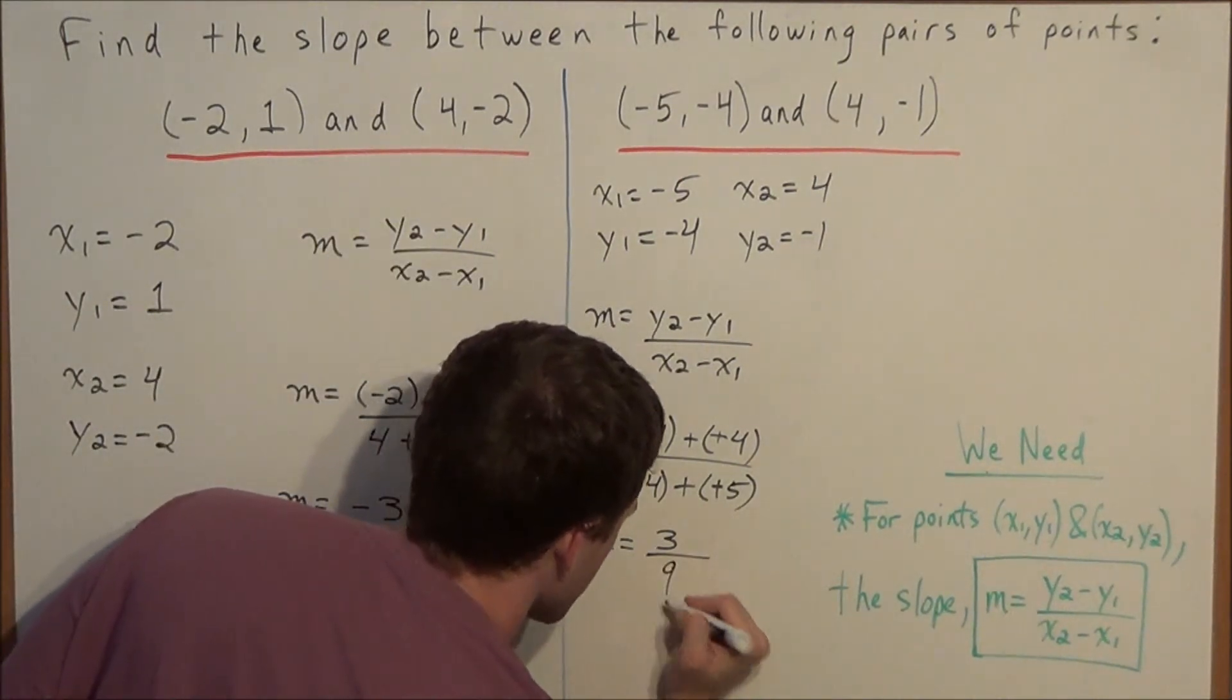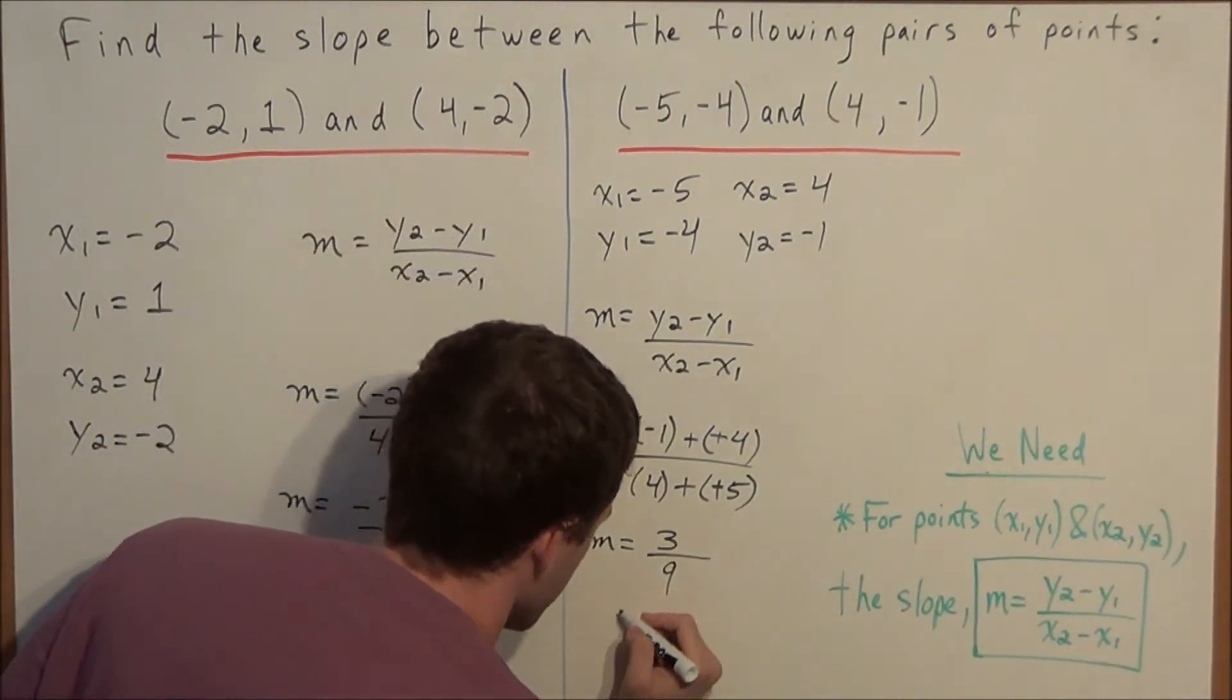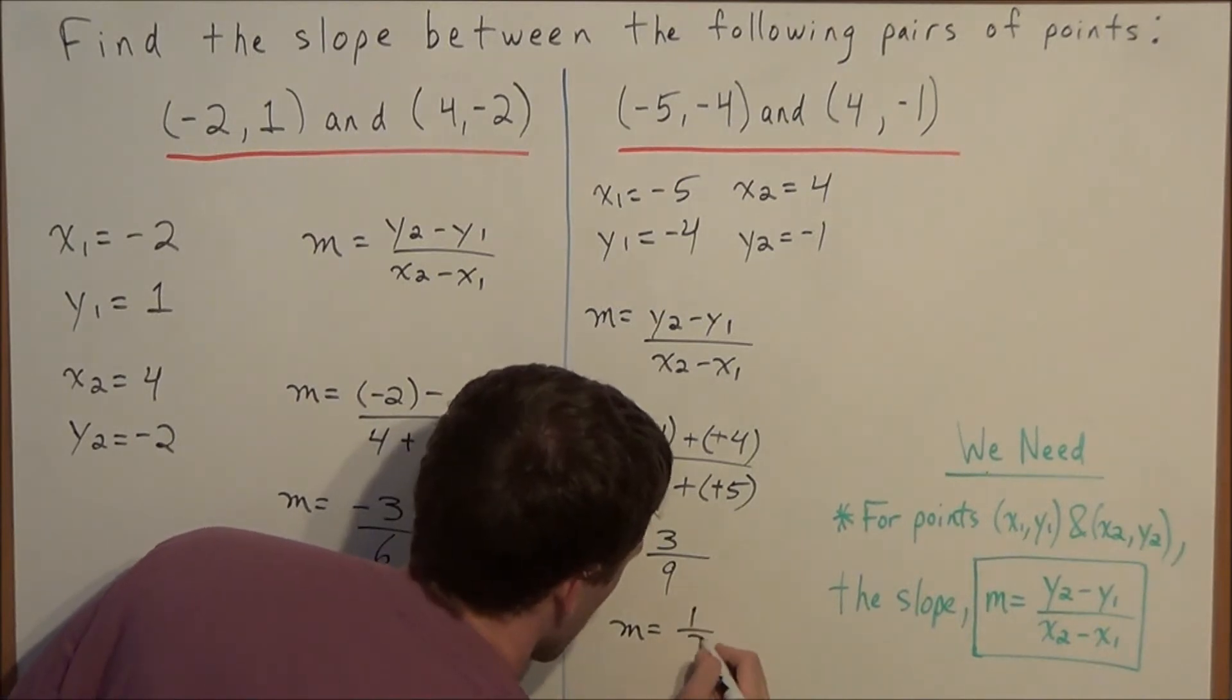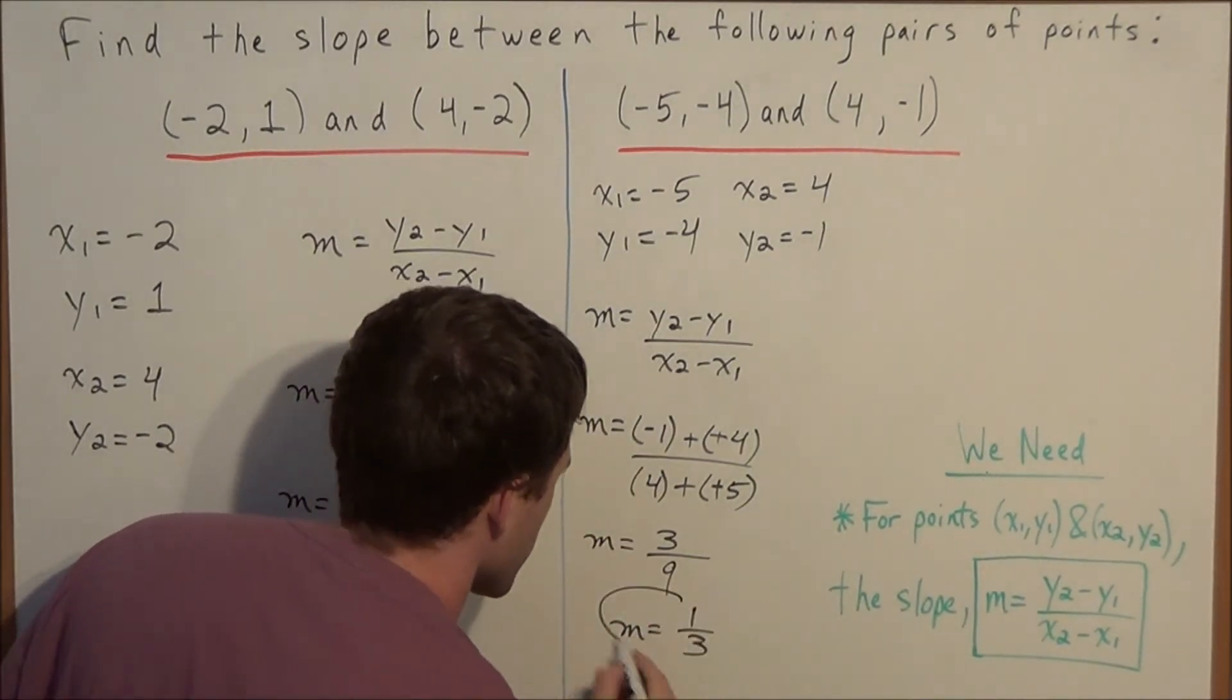So our slope in this case is equal to three over nine, but we do need to reduce. So we have a slope of one-third when we reduce three over nine.